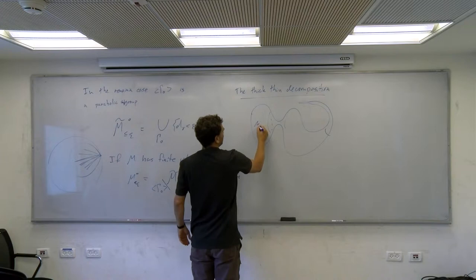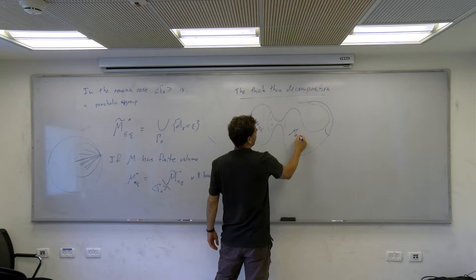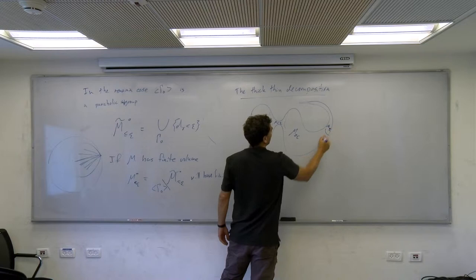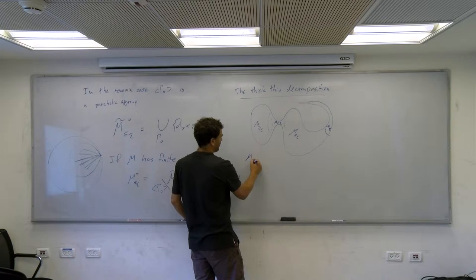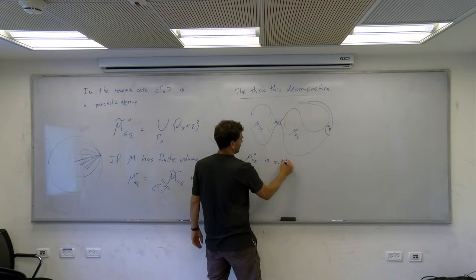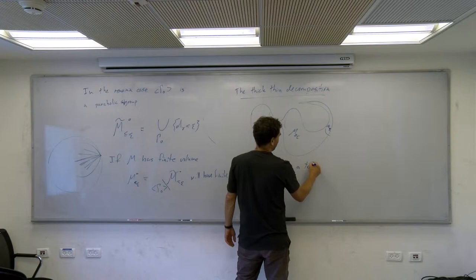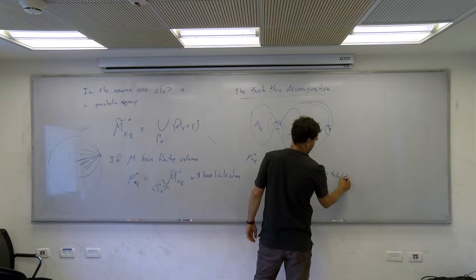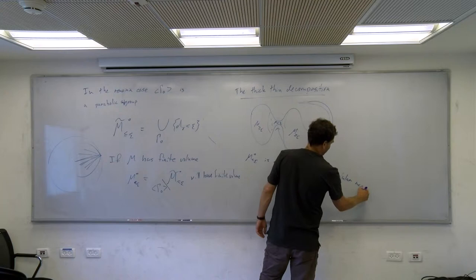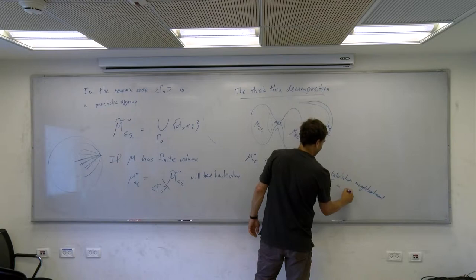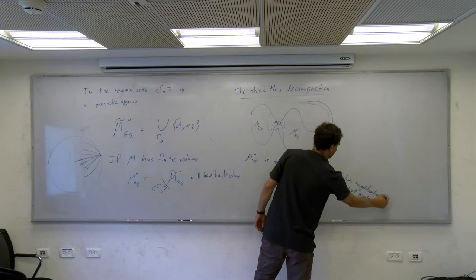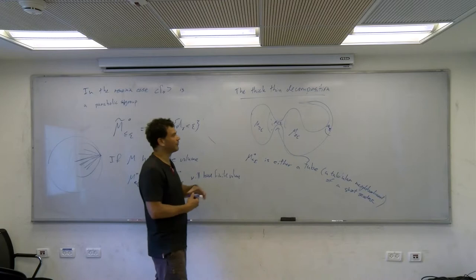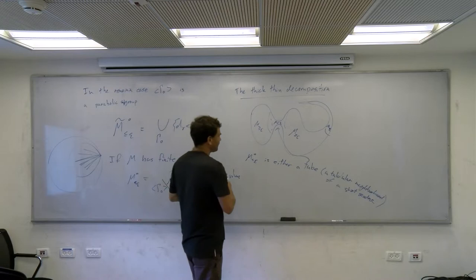There are two types: the thick part, which is usually connected except in dimension three, and the thin part, except in dimension two. The thin parts — each component is either a tubular neighborhood of a short geodesic, or a cusp. In the compact case that's all that can happen; in particular the fundamental group does not have parabolic elements.